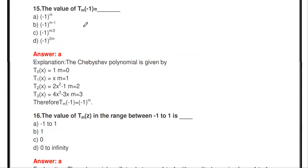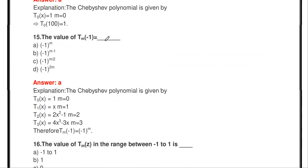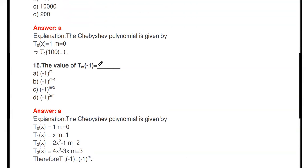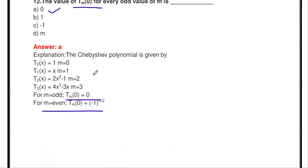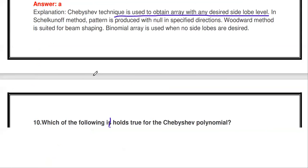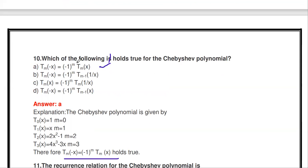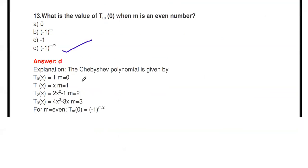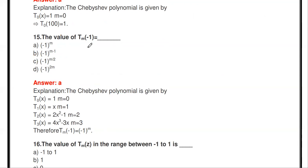The value of Tₘ(−1) is? Using the relation Tₘ(−x) = (−1)ᵐ · Tₘ(x), we set x = 1. So Tₘ(−1) = (−1)ᵐ · Tₘ(1). Since Tₘ(1) = 1, the answer is (−1)ᵐ.